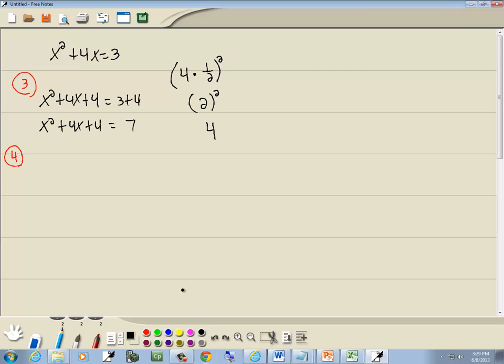Step four, factor the left side. Well, the left side factors as x plus 2 squared. Remember the trick for that. Whatever number is right here in your parentheses, right before you square, sign included, is what goes right down here. If you remember that trick, it makes that step so easy.